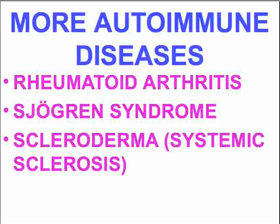Scleroderma — if you'd like to think of that as limited to the skin, you're just downright wrong. The fibrosis of chronic scleroderma extends to all connective tissues, and that's why it's no longer called scleroderma. That's why it's called systemic sclerosis.